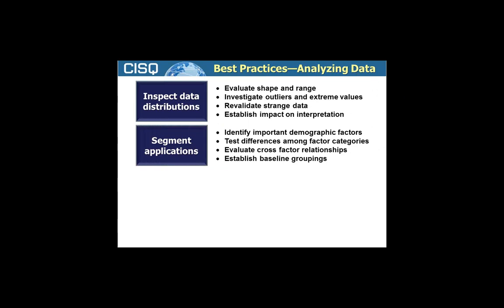Then segment the applications. Use the demographic data to decide what are the major segments of applications for which you'll form baselines, because I don't want to be comparing apples and oranges — I'd rather have a baseline that compares apples to apples so that over time I don't have some bizarre sampling effect affecting my productivity baselines. Within that collection of projects, I might discover there's a very different set of factors controlling productivity in one segment than in another. That's very important because it helps drive the productivity improvement program, and we can only detect that if we look inside the different segments at their baselines.